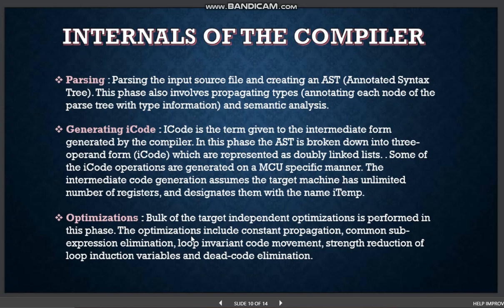The bulk of target intermediate optimization is performed in the optimization phase, which can be broken down into several sub-phases: breaking down intermediate code into basic blocks; performing control flow and data flow analysis on basic blocks; doing local common sub-expression elimination; then global sub-expression elimination; dead code elimination; and loop optimizations. If loop optimizations cause any changes, then global sub-expression elimination and dead code elimination are performed again.